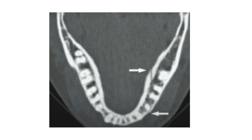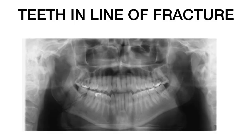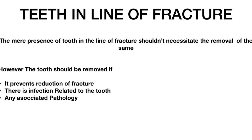The next concept regarding favorable and unfavorable fractures is teeth in the line of fracture. This has been a controversial topic, but based on guidelines from the Clinics of North America, the mere presence of a tooth in the line of fracture should not necessitate its removal. Indications for removal include: the tooth prevents reduction of the fracture, there is periapical or periodontal infection associated with the tooth, or there is an associated pathology.